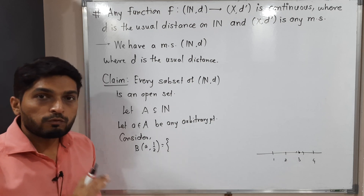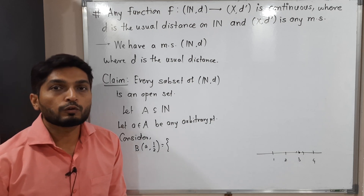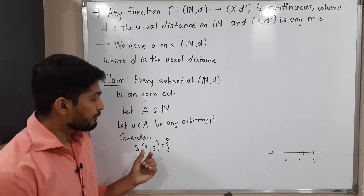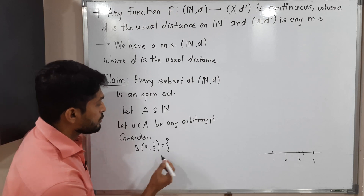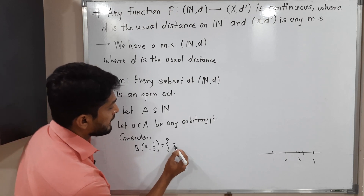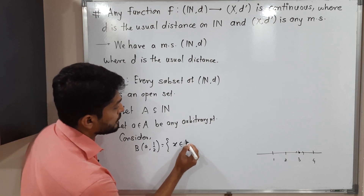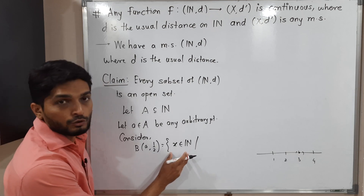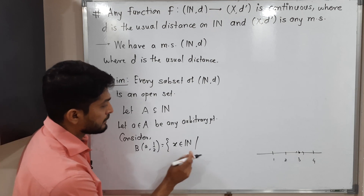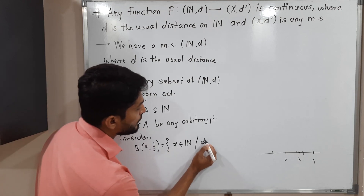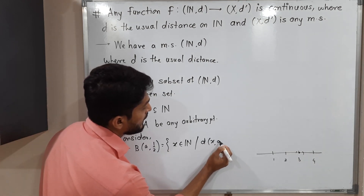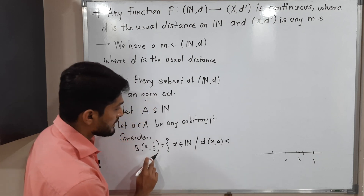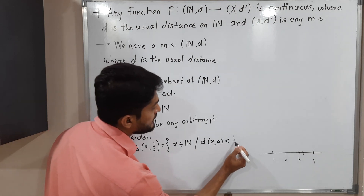We have to find a ball around 'a' which is a subset of A. Consider a ball with center 'a' and radius 1/2. Following the definition of open ball, it is a collection of all x in N satisfying d(x, a) < 1/2, where the radius is 1/2.